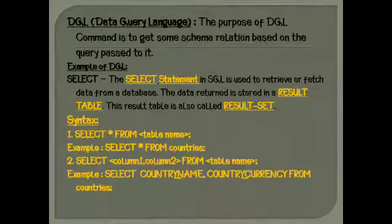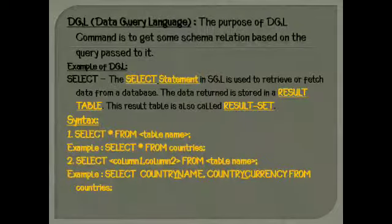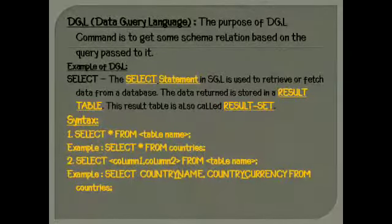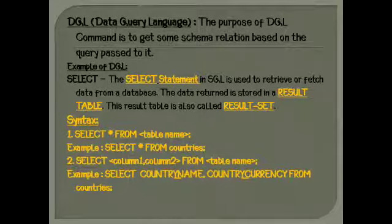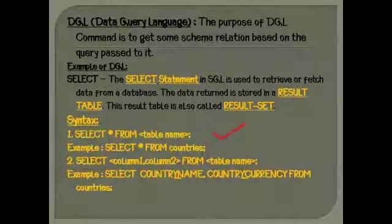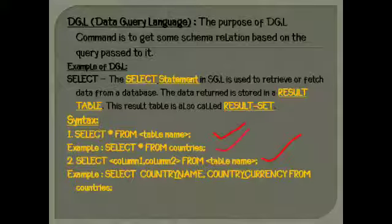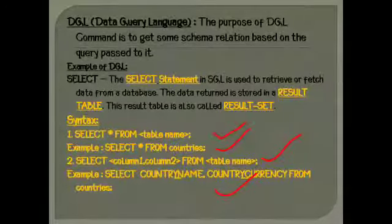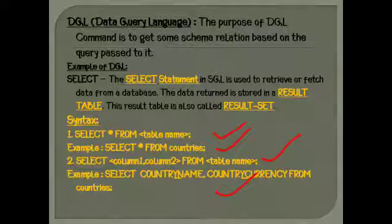Next is DQL — data query language. The purpose of DQL commands is to get schema relations based on the query passed to it. An example of DQL is the SELECT statement. The SELECT statement in SQL is used to retrieve or fetch data from a database. The data returned is stored in a result table called the result set. Here are two syntaxes and two corresponding examples for the SELECT statement.